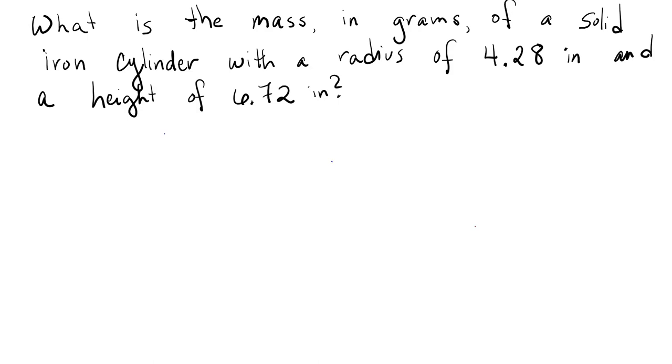For our first step, we need to identify what we're told in the question. We know that we have a radius of 4.28 inches, a height of 6.72 inches, and we're told that the shape is a cylinder, and that it is made of iron.